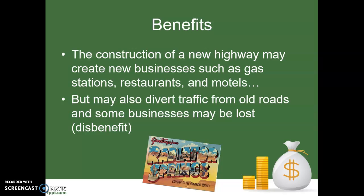When the textbook talks about dis-benefits, an example they use involves building a new highway. That reminds me of the first Disney Pixar Cars movie — the town of Radiator Springs was a small town on Route 66 in the western U.S. When the interstate system was built, the town was bypassed. So there are both benefits and dis-benefits to building that interstate highway.